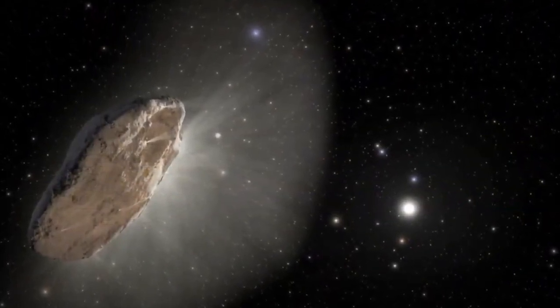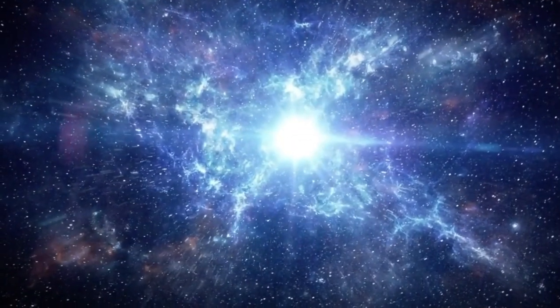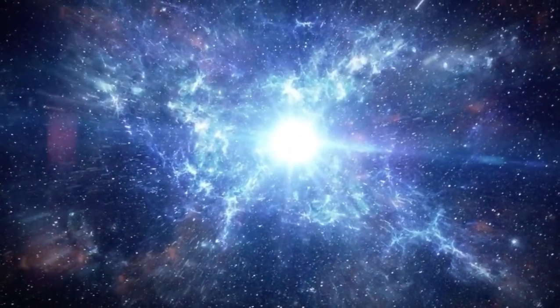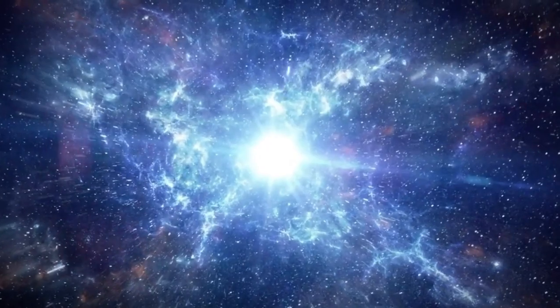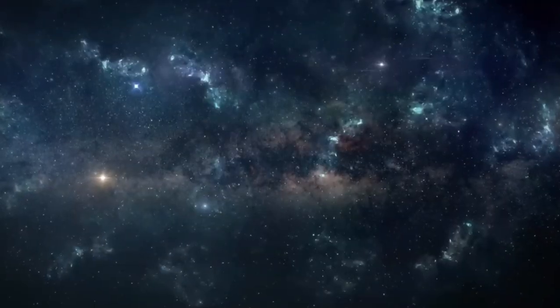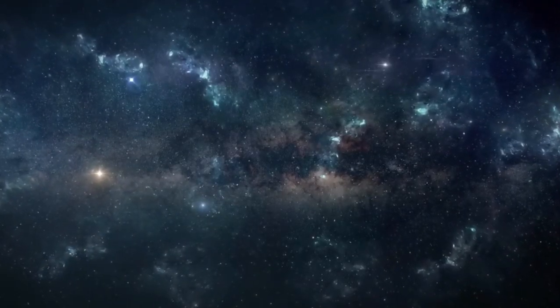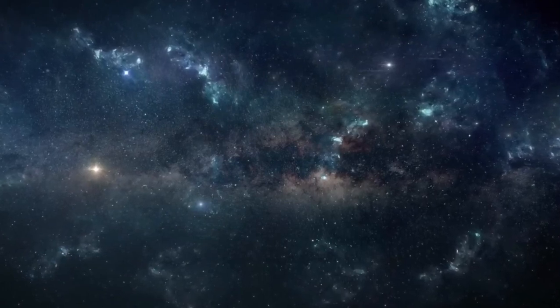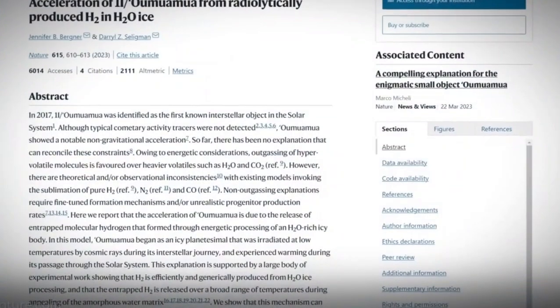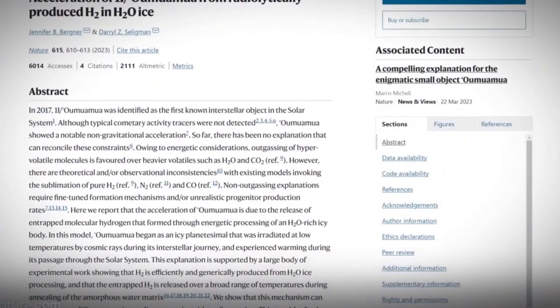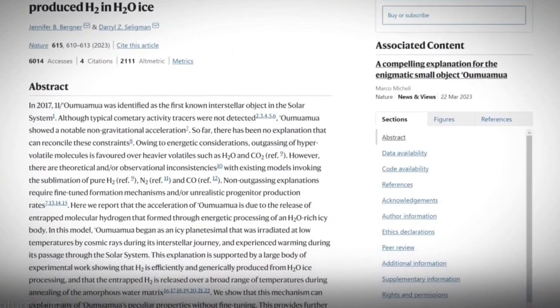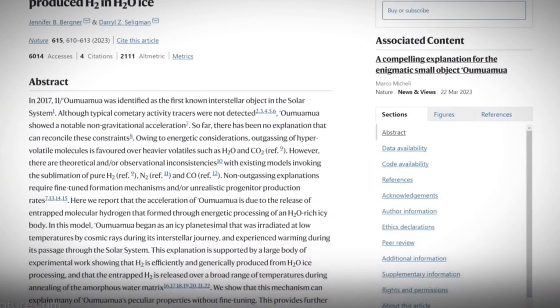Conventional chemical rockets cannot catch up with Oumuamua as it journeys towards the outer solar system. Nevertheless, there's a slim possibility that we might closely observe the object. Initiatives such as Breakthrough Starshot aim to launch small robotic probes equipped with sails, hurtling them toward Oumuamua at unprecedented speeds, potentially facilitating future exploration.